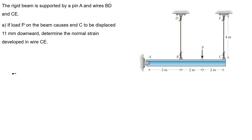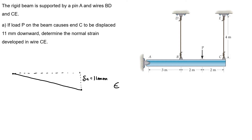The first part states that our load B displaces our end C by 11 mm, so we have displacement C equals 11 mm. We know that the normal strain is the displacement over the original length.